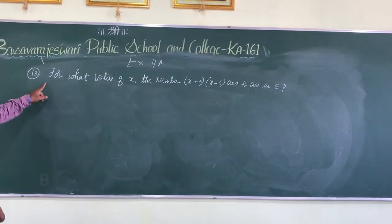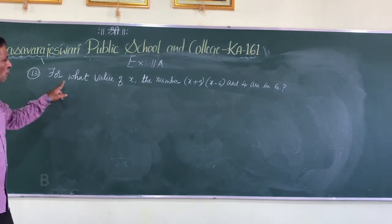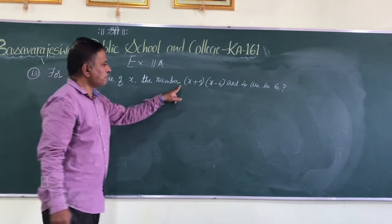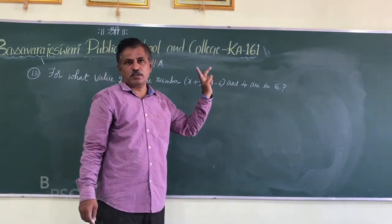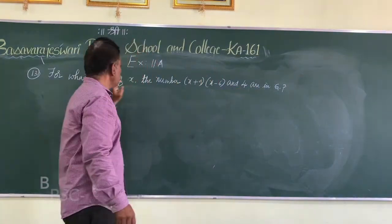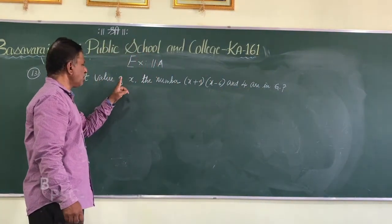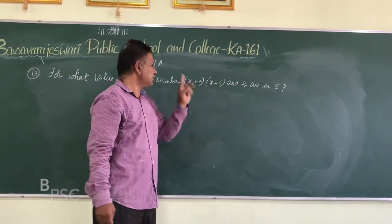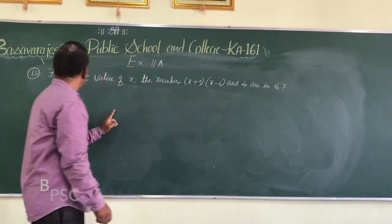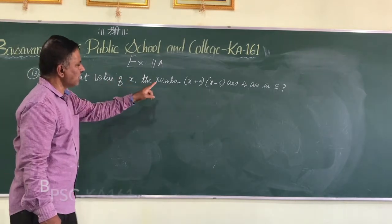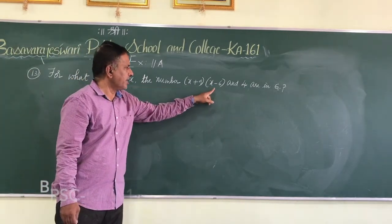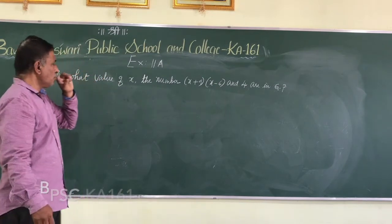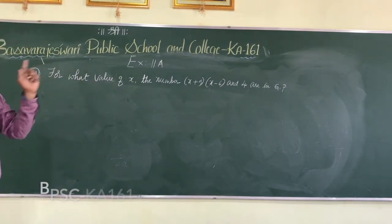Question 13: For what value of X are the given numbers in GP? If I substitute the value of X, then these three numbers should be in GP. The numbers are X plus 9, X minus 6, and 4. What value of X will make them a geometric progression?